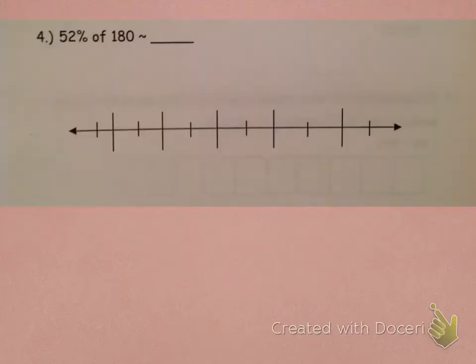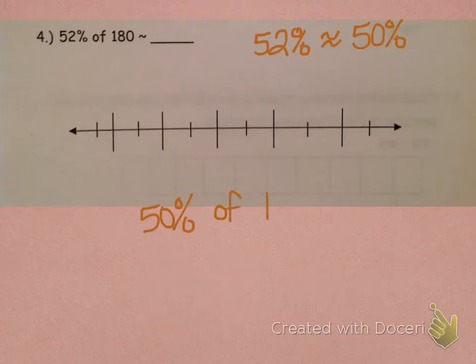Let's try another one. This one says 52% of 180. Remember, let's estimate here. So, let's say that we have 52%, and we're going to estimate it to about 50%. That means that we want 50% of 180. We should know by now that 50% is half.